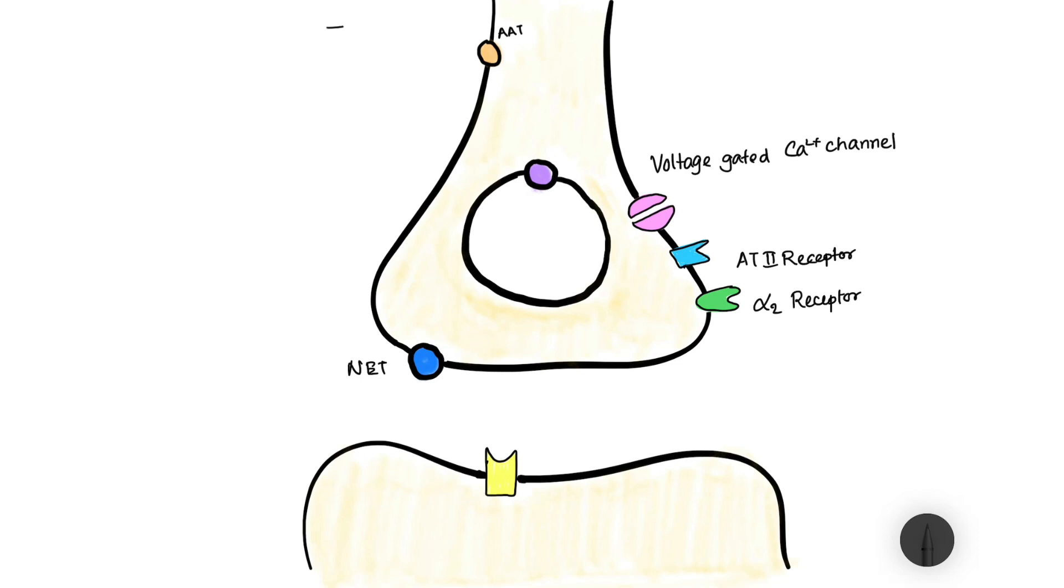Basically, it starts from uptake of tyrosine from the bloodstream. Tyrosine is taken up from the bloodstream via a receptor known as amino acid transporter.